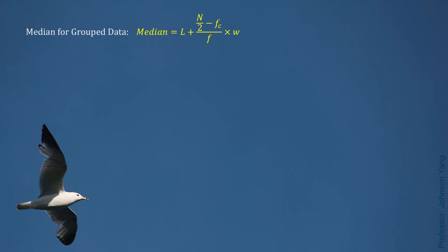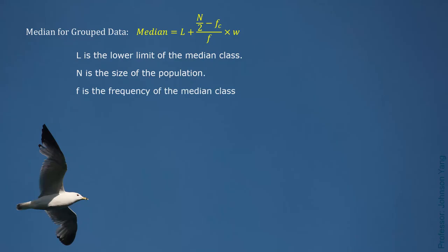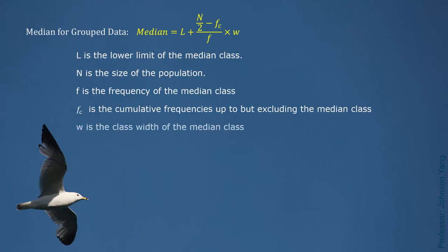In this formula, all the notations are related to the median class. L is the lower limit of the median class. N is the size of the population or sample. F is the frequency of the median class. FC is the cumulative frequency up to but excluding the median class. W is the class width of the median class. Let's take a look at an example to show how the estimation is done.